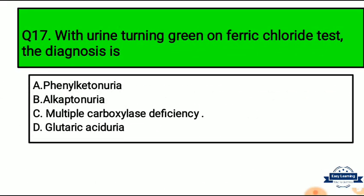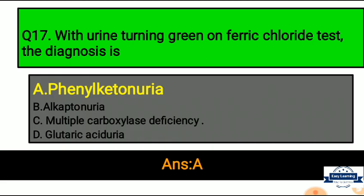Question 17: With urine turning green on ferric chloride test, the diagnosis is — Option A: Phenylketonuria, Option B: Alkaptonuria, Option C: Multiple Carboxylase Deficiency, Option D: Glutaric Aciduria. Correct answer is Option A, Phenylketonuria.